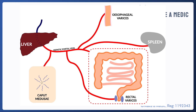In order to reduce the pressure on the portal system, blood gets shunted towards sites of portosystemic anastomosis and there are three main sites that are important to remember. First of all we have esophageal varices, which are very important to note because patients with esophageal varices can suffer from massive GI bleeds which can be fatal.